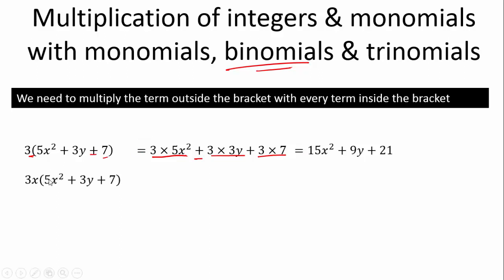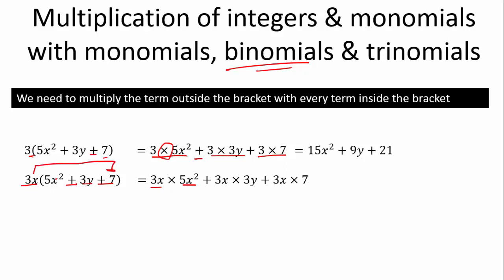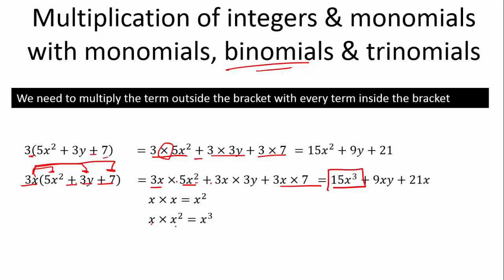What about 3x times (5x² + 3y + 7)? This is the same as 3x multiplied by 5x², plus 3x multiplied by 3y, plus 3x multiplied by 7. I've drawn arrows in here to make it easier. Remember, x times x squared is x cubed, so this gives us 15x cubed, plus 9xy — since x times y is xy — plus 21x.